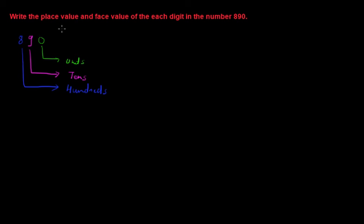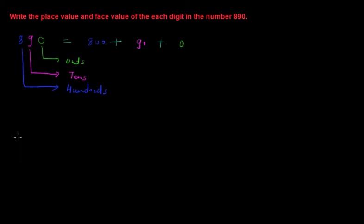Before writing the place value and face value of 890, I suggest writing the expanded form. Since 8 is at the hundreds place, it becomes 800. Since 9 is at the tens place, it becomes 90. And since 0 is at the units place, it is equal to 0. So 890 = 800 + 90 + 0.